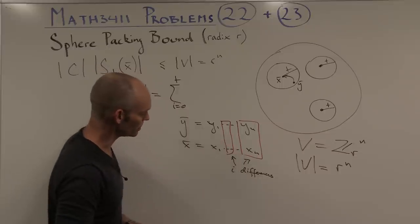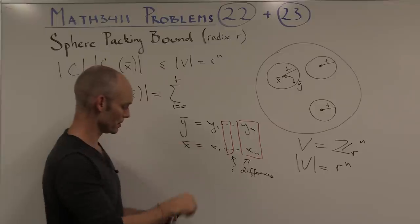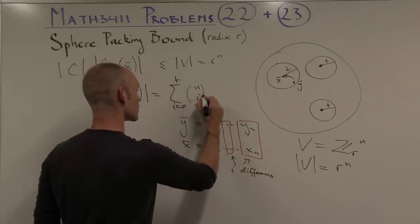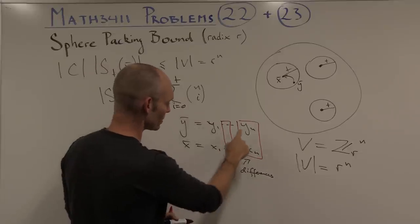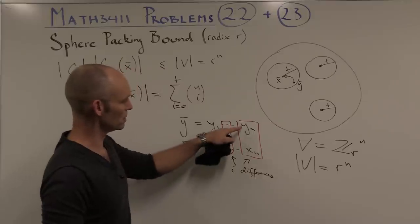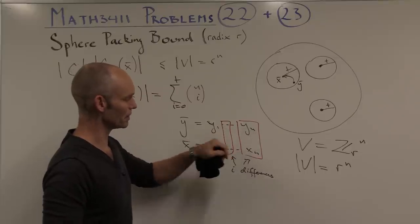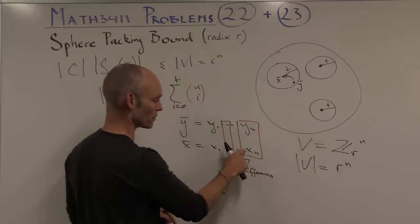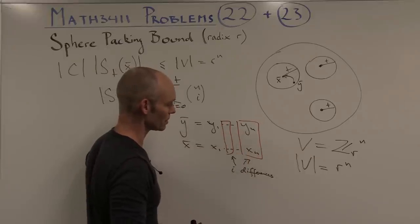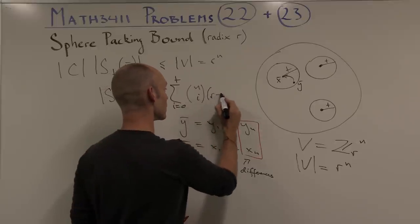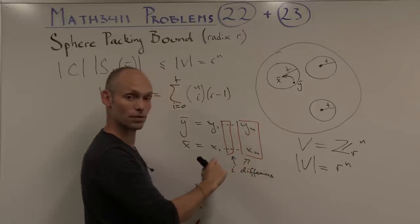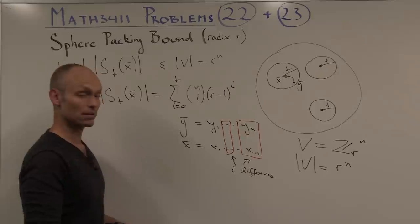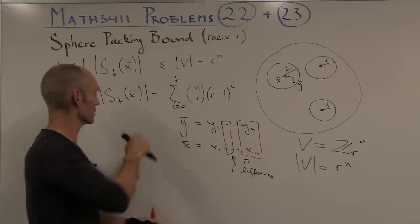How many of these words are there? Well, first we could consider the coefficients in which they're different. How many ways are there of choosing that? There are n coordinates and we're choosing i of them. Now for each of those coordinates where there are differences, we can choose the y value to be different from the x value in r-1 ways. So we have r-1 ways of choosing the difference, and that's true for each of the coordinates in which there is a difference. That's the volume of each of those spheres around any of the codewords of radius t.